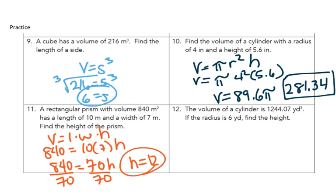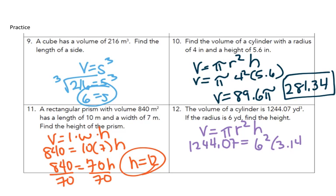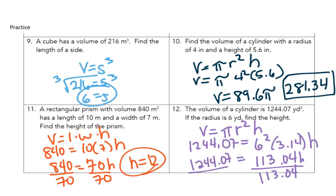The volume of a cylinder is 1,244.07. If the radius is 6, find the height. Remember, volume of a cylinder is pi r squared h. We know what the volume is, which is 1,244.07 equals 6 squared times 3.14 times our height. We're going to get 36 times 3.14, which will give us 113.04h. We're going to take 113.04 and divide it on both sides, and we'll get a height of 11.